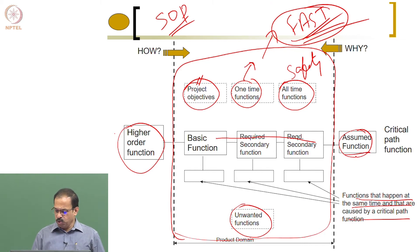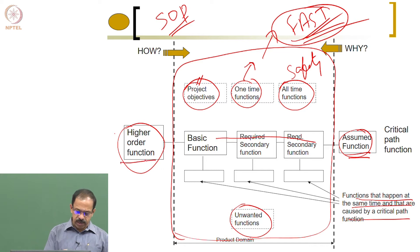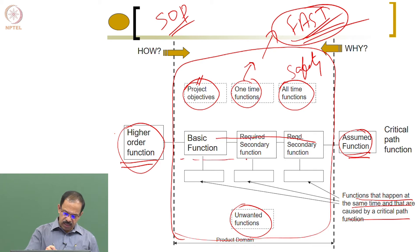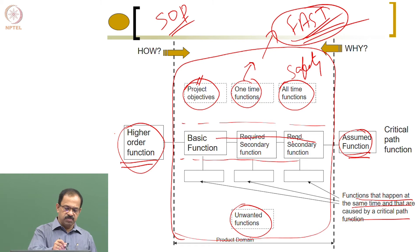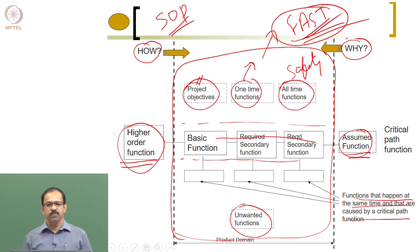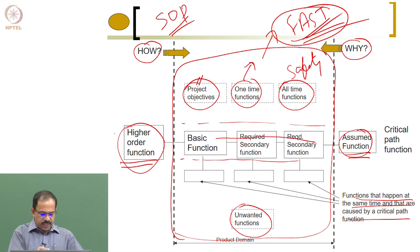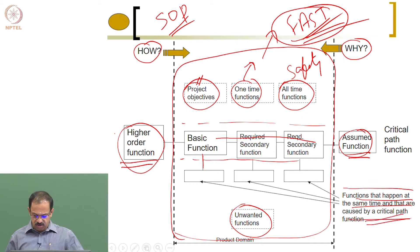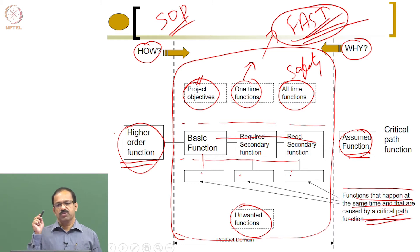To summarize: the assumed function is the input, the higher order function is the output, and all functions between the two boundary lines are the critical path functions. By asking 'how' from the right or 'why' from the left, you identify these critical path functions. All functions happening alongside these basic functions are sub-functions, caused by the critical path functions.